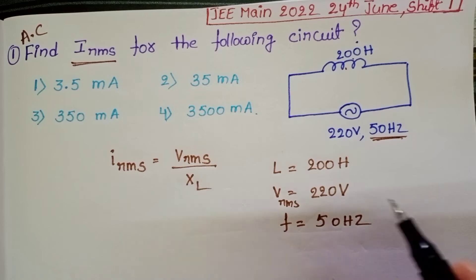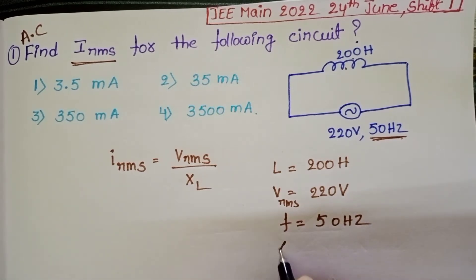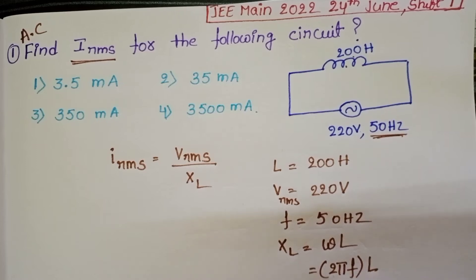But we don't know XL. By using this information let us find out XL also. XL is equals to omega L, in place of omega substitute 2 pi F into L.